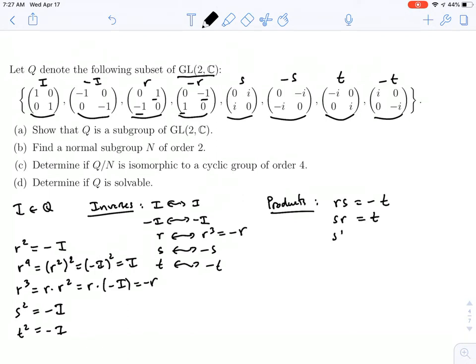If you check S times T, you'll get negative R. And T times S will be positive R. And then keep going around the horn. T times R will be negative S. And then R times T will be positive S.